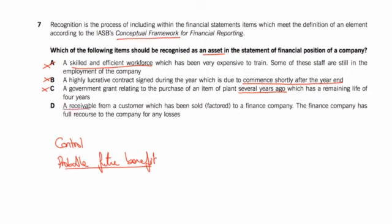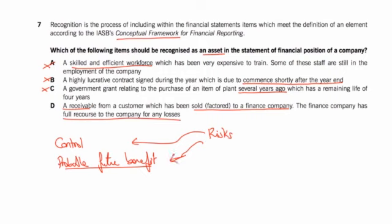Part D: a receivable. A receivable brings in probable future economic benefit from a customer, which has been sold to a finance company. You might think we won't get the benefit and don't control it, but the finance company has full recourse to us — they can give it back. So we are taking the majority of the risks, which is similar to control, and we will get the future economic benefit. The answer is D.